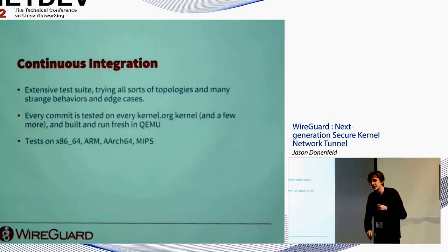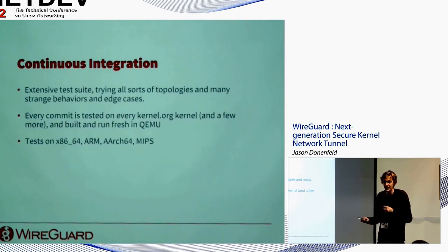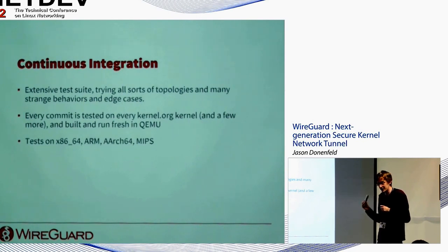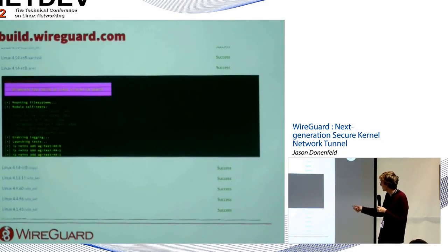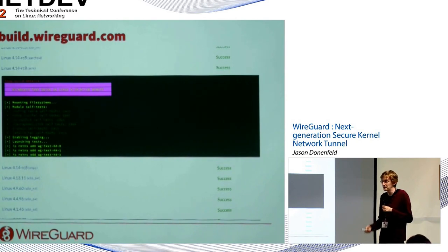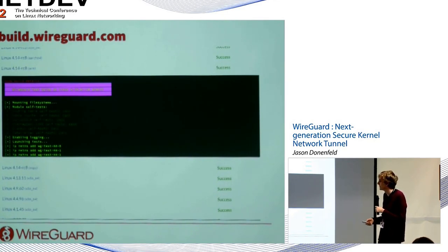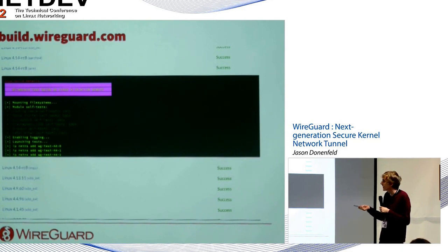There's an extensive continuous integration suite testing all sorts of topologies, weird behaviors, netfilter interactions, and peers coming and going. Every commit is tested on all kernels listed on kernel.org, freshly built and run in QEMU across multiple architectures. There are built-in self-tests, and buildwireguard.com shows current status. This infrastructure is immensely useful — push commits quickly, watch them break, go back and fix. Every new bug found results in a new test case.